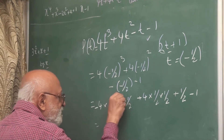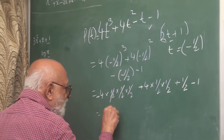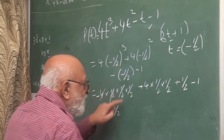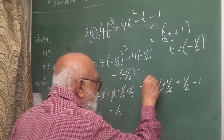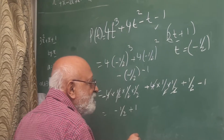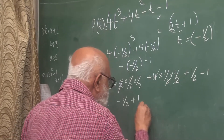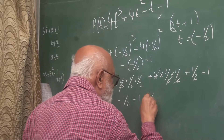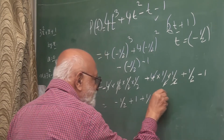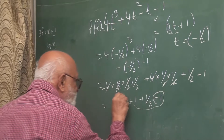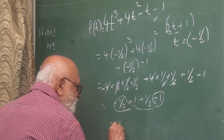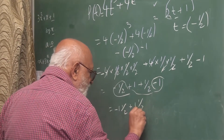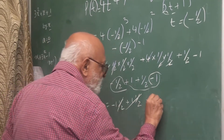Let us see what it comes out to be. This will be minus half, this 4 will cancel out, so half times half times minus half — this will become plus 1, so this will be minus 1, plus 1. This will be minus 1. This will become 1 minus 1 and a half, and this will become plus 1 and a half. These will cancel and this will become 0.